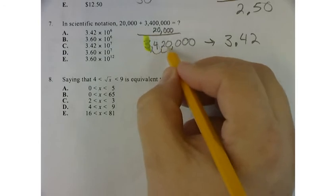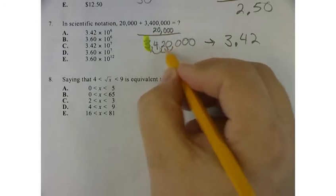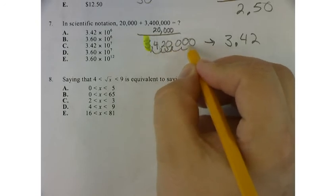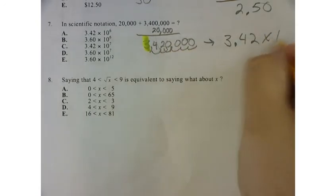I moved it 1, 2, wait, 1, 2, 3, 4, 5, 6. So that would be times 10 to the 6.